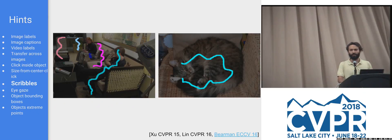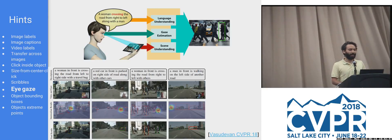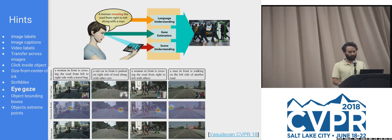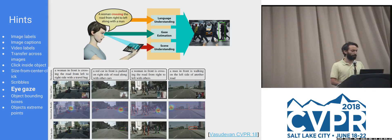Scribbles are an extended version of clicks where you move around, providing a stronger view of the object's extent — both inside the object and outside in the background. A more unusual hint is eye gaze: if you have a tablet capable of following your eyes, one paper being presented at this conference shows that having someone describe a specific object in the scene while looking at it — fusing this spoken description with gaze information — allows you to guess which bounding box is intended, which can then be used as box supervision for pixel labeling.